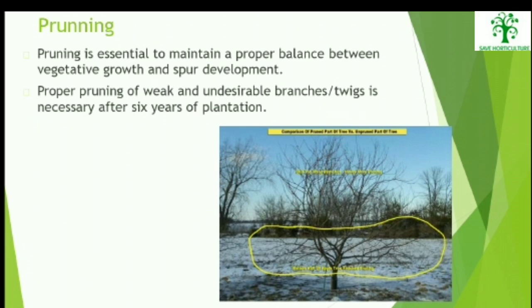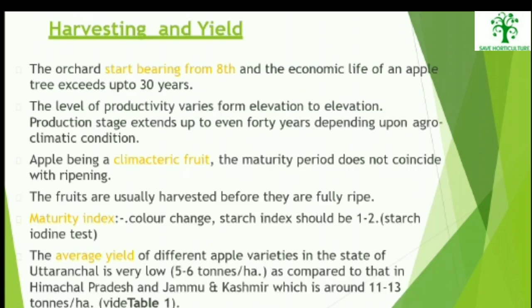Pruning: Pruning is essential to maintain a proper balance between vegetative growth and spur development. Proper pruning of weak and undesirable branches or twigs is necessary after six years of plantation.